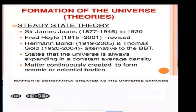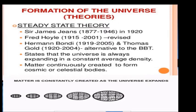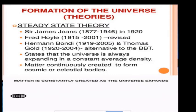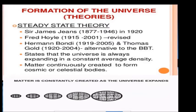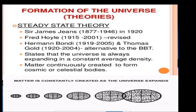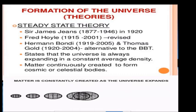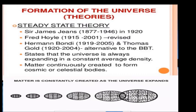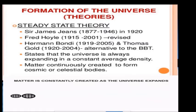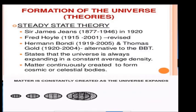When we say steady state theory — according to Sir James Jeans, Fred Hoyle, revised by Herman Bondi and Thomas Gold — as an alternative to the Big Bang theory, they state that the universe is always expanding at a constant average density. Matter is continuously created to form cosmic and celestial bodies. It means the universe has always been the same since the beginning — never changed — still expanding, but constant in average density.